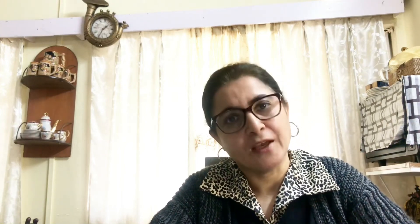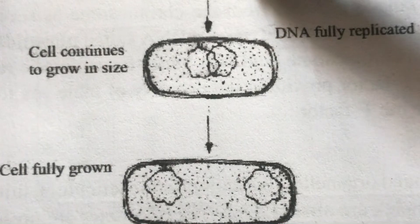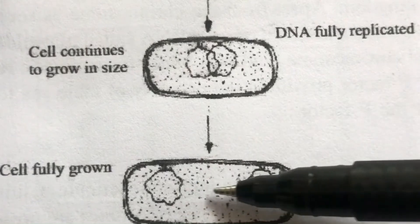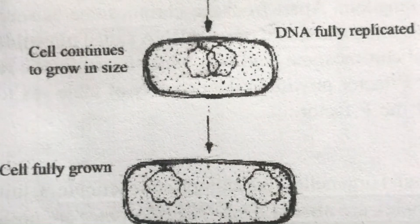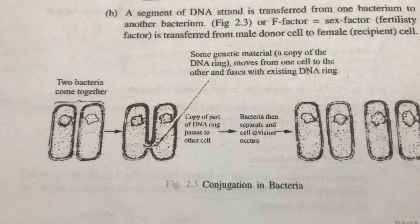Bacteria have both sexual and asexual reproduction. Asexual reproduction in bacteria is by binary fission. In this case, the parent bacterium divides into two — first the DNA material divides, then the cytoplasm divides, and a small constriction forms by which it splits into two daughter cells that later develop to look exactly like the parent cell. This is called binary fission because one bacterium splits into two.